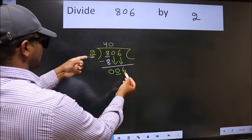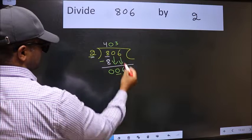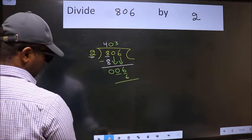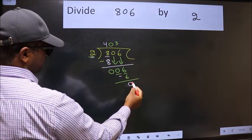Now 6. When do we get 6 in the 2 table? 2 times 3 is 6. Now we should subtract. We get 0.